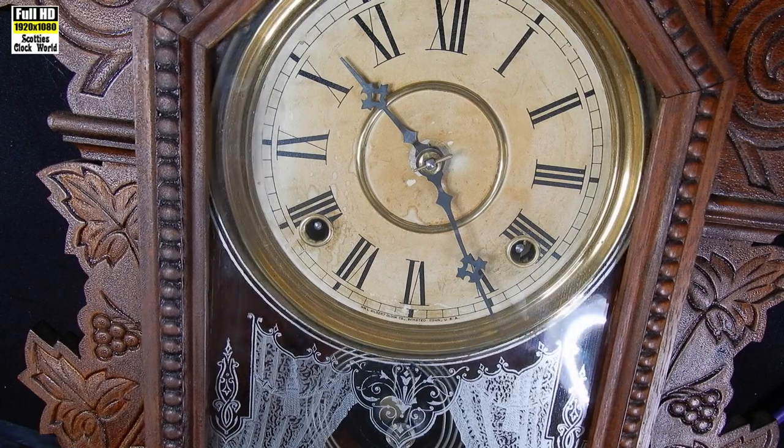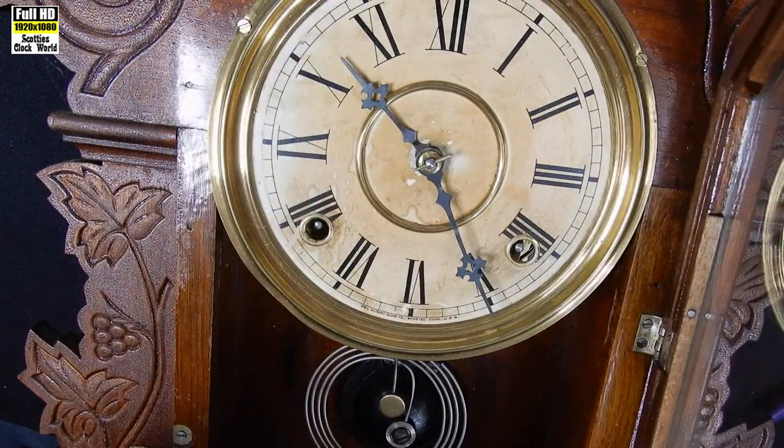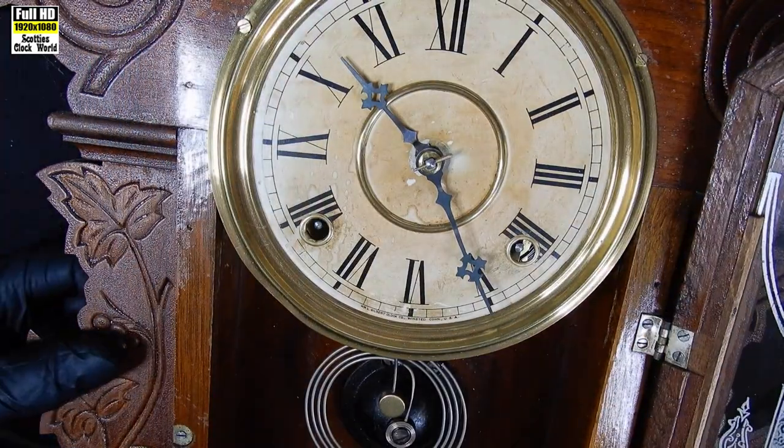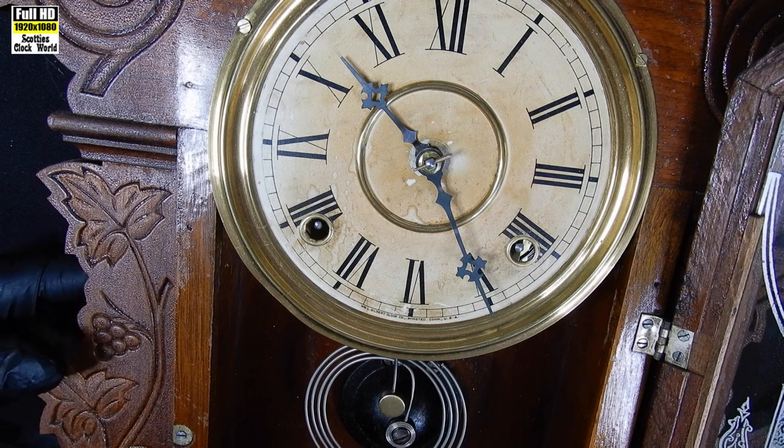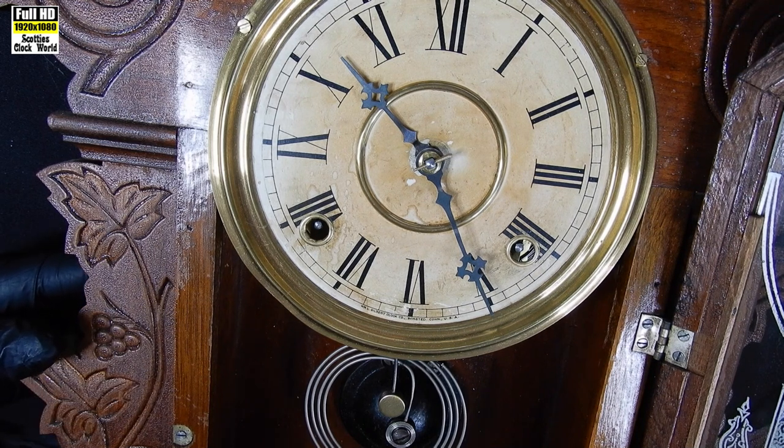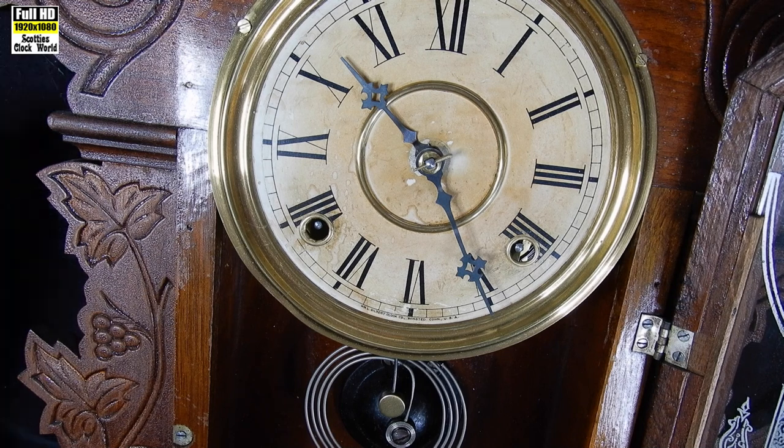This is a Gilbert kitchen clock that we'll be working on. It's very similar to an Ansonia and a Sessions. They're all quite easily obtainable. You can find them quite easily around the place.